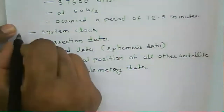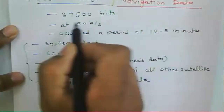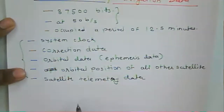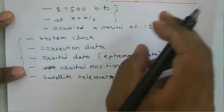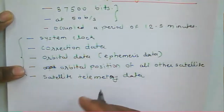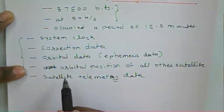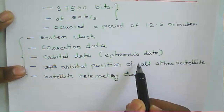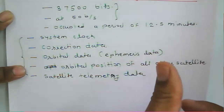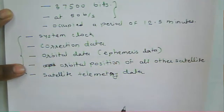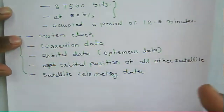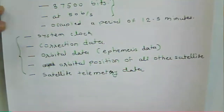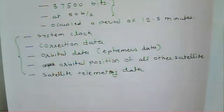The GPS message consists of 37,500 bits at a rate of 50 bits per second, and that occupies 12.5 minutes. Once the signal reaches the receiver, it knows which satellite transmitted it via the ephemeris data of that satellite, plus the orbital position of all other satellites in the constellation. There are generally 24 satellites in the constellation, and they send data to the receiver. The receiver then computes range and position from that signal.